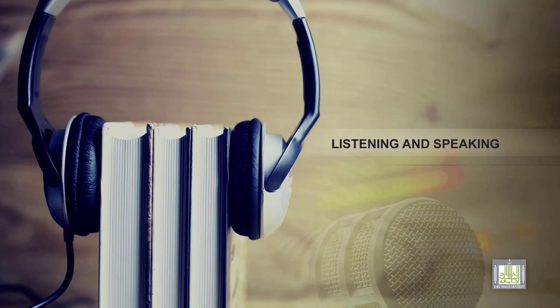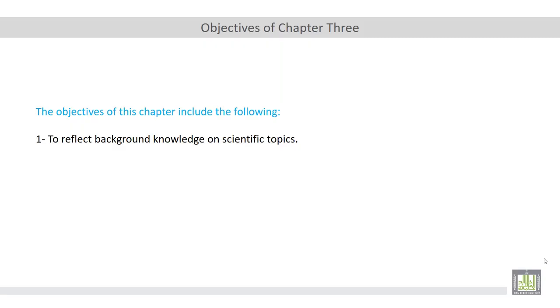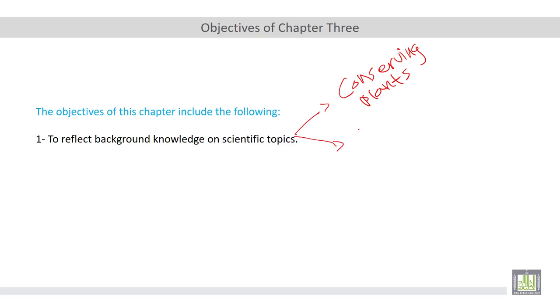These topics include plants and bees. The objective of this chapter is as follows: we have only one main objective, which is to reflect background knowledge on scientific topics. These topics include conserving plants, which is going to be a very interesting topic, and the second scientific topic is about bees.